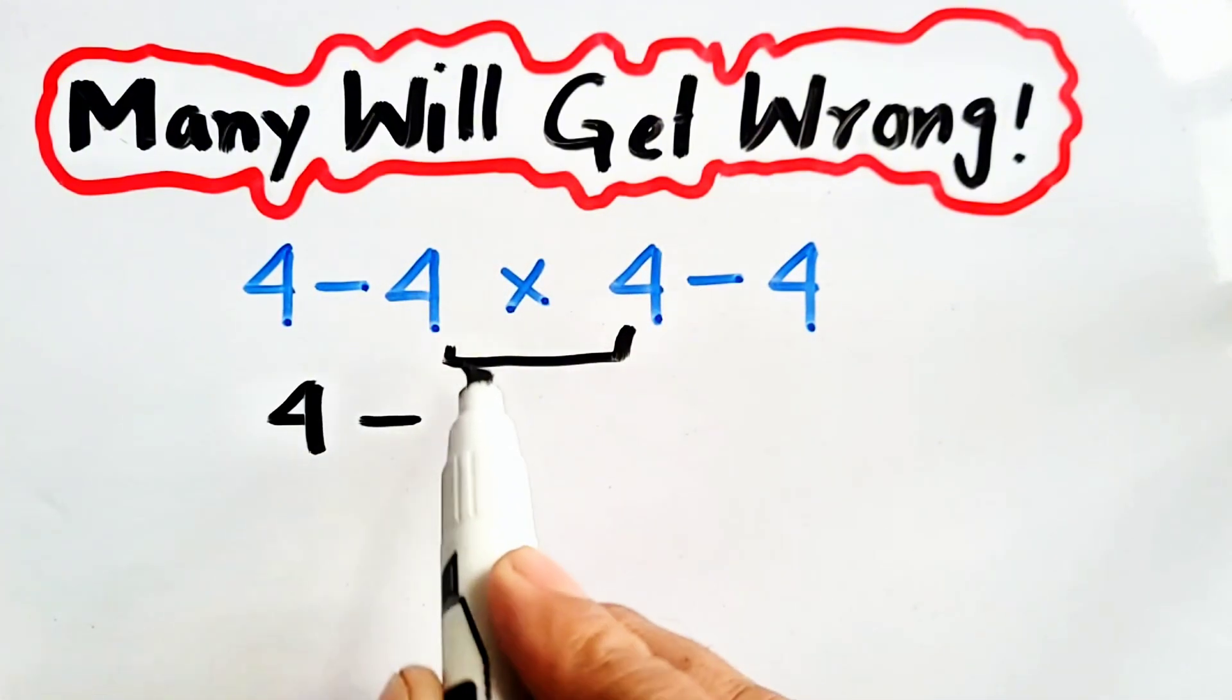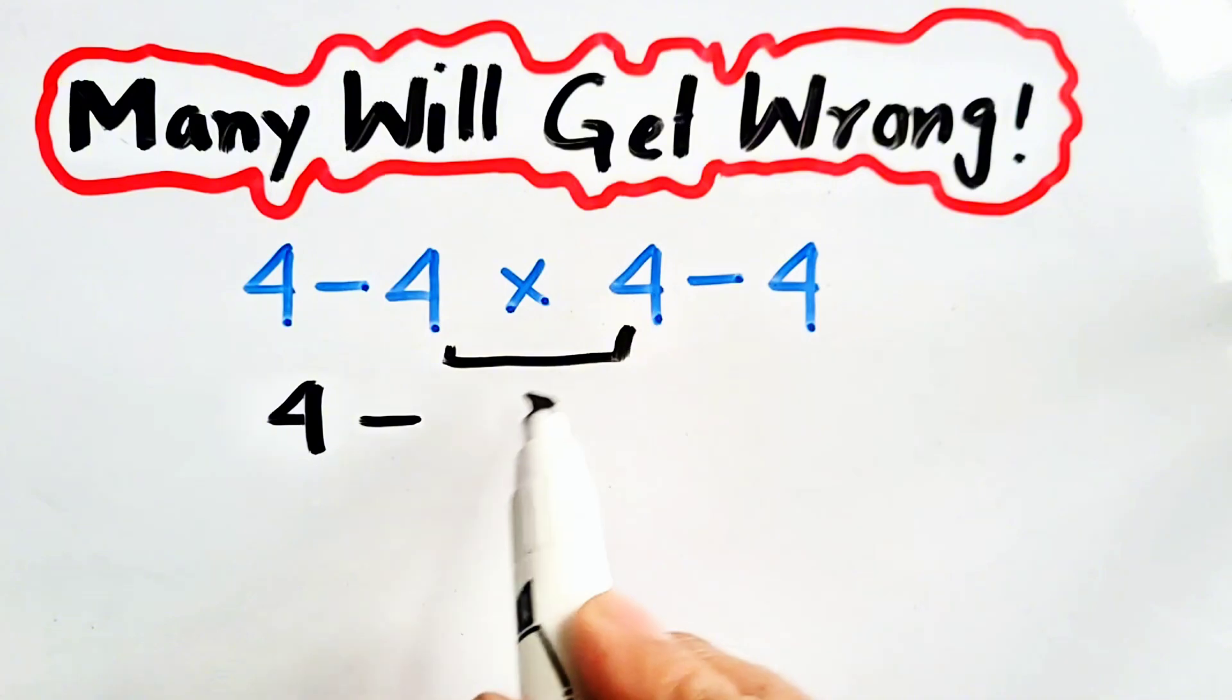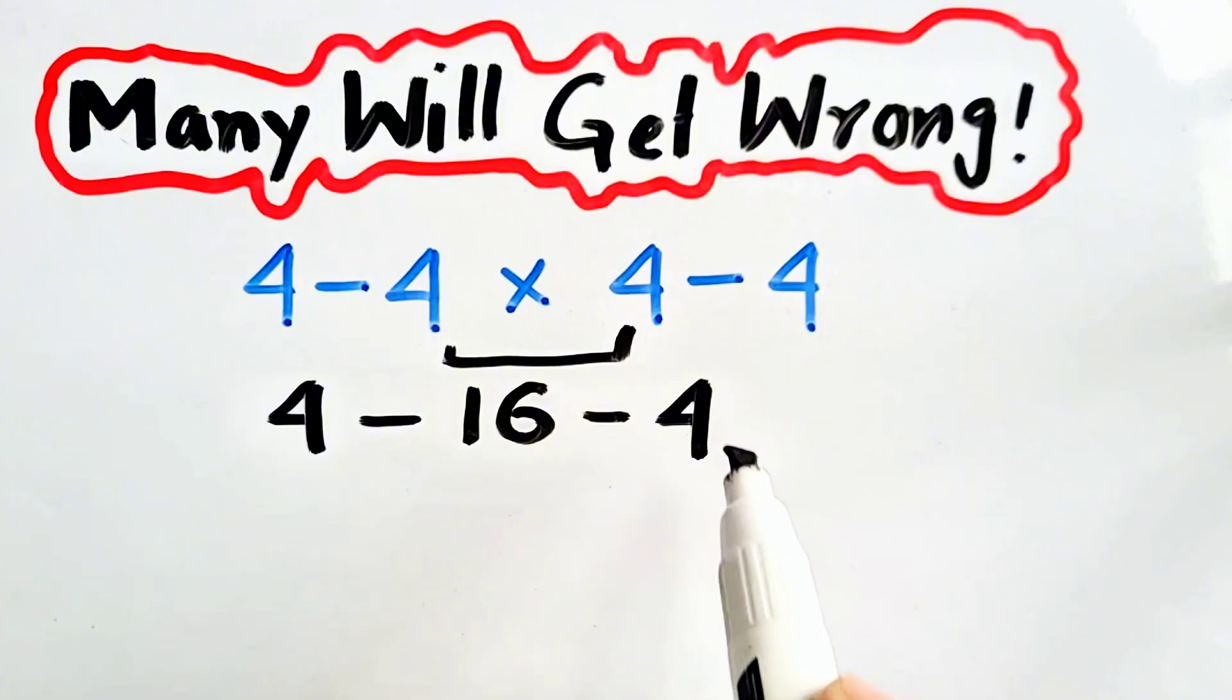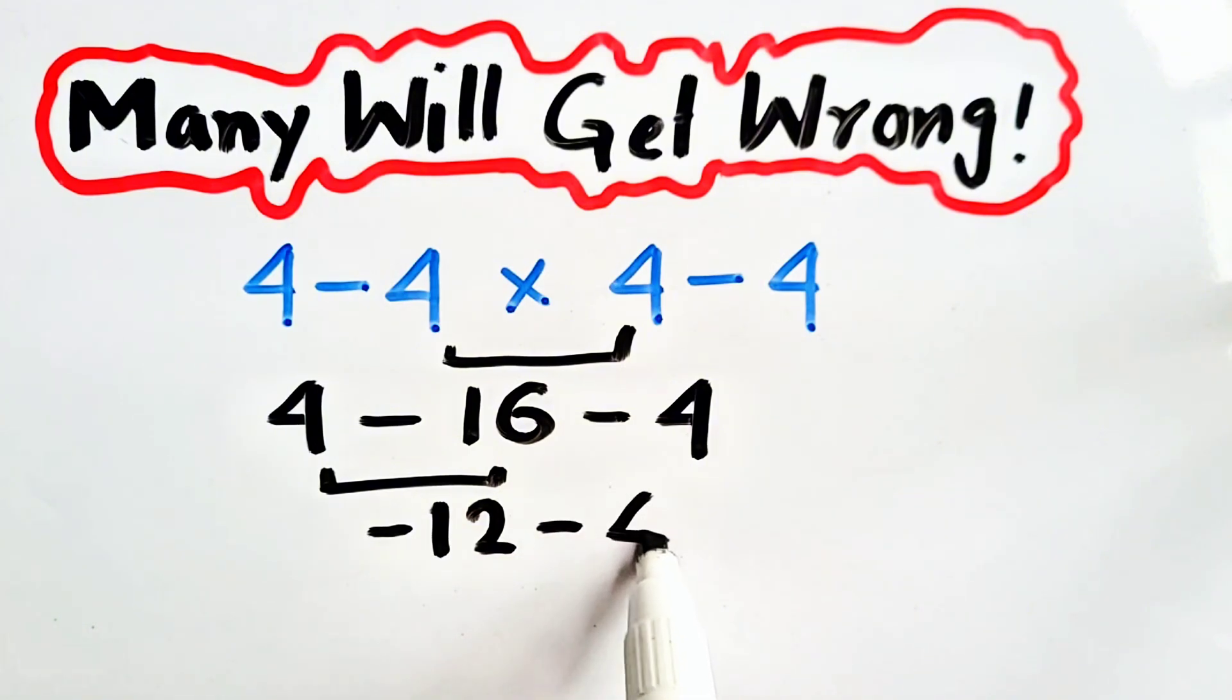So, 4 times 4 will be solved first, which will be equal to minus 16, and that is minus 4. So it will be 4 minus 16, equal to minus 12 minus 4.